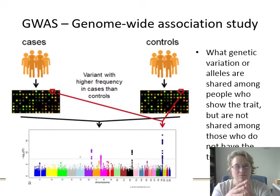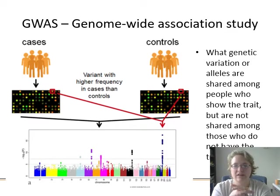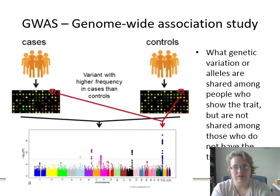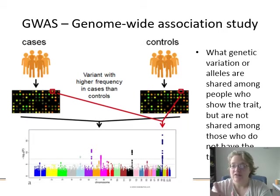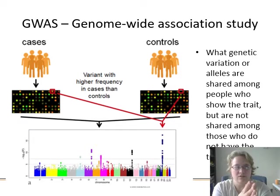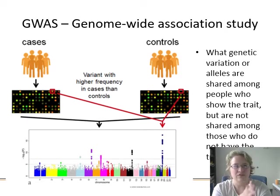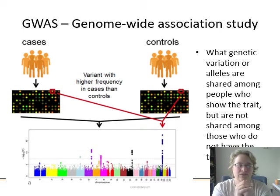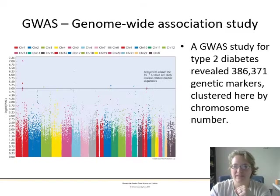One of the coolest tools we have for looking at traits affected by multiple genes is the genome-wide association study, or GWAS. For something like a predisposition to breast cancer, we look at hundreds of thousands of people — those with the condition and those without — and ask: what do people with the condition have in common that differs from those without it? What alleles or genes are shared among people who have the trait but not among those who don't? For example, everyone has the BRCA1 gene, but some people have a mutation of that gene leading to early breast cancer — it's about which variant, or allele, of the gene is present.